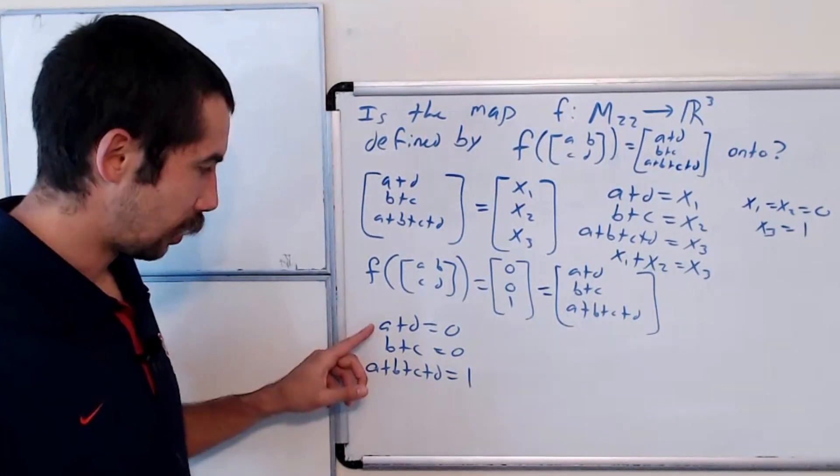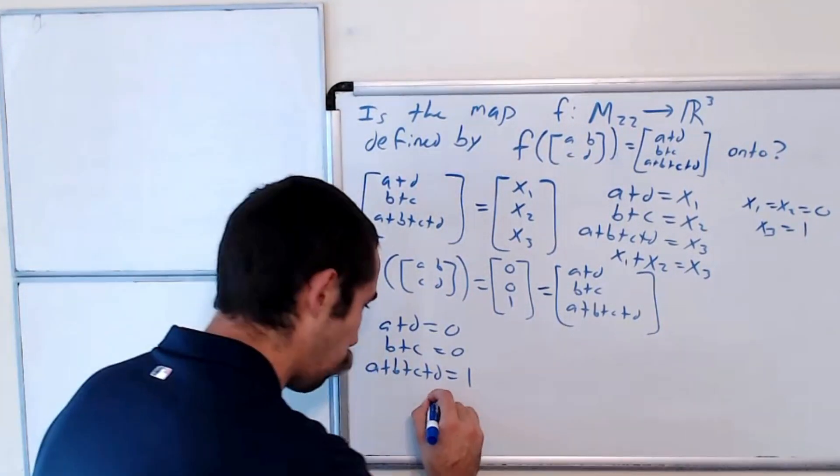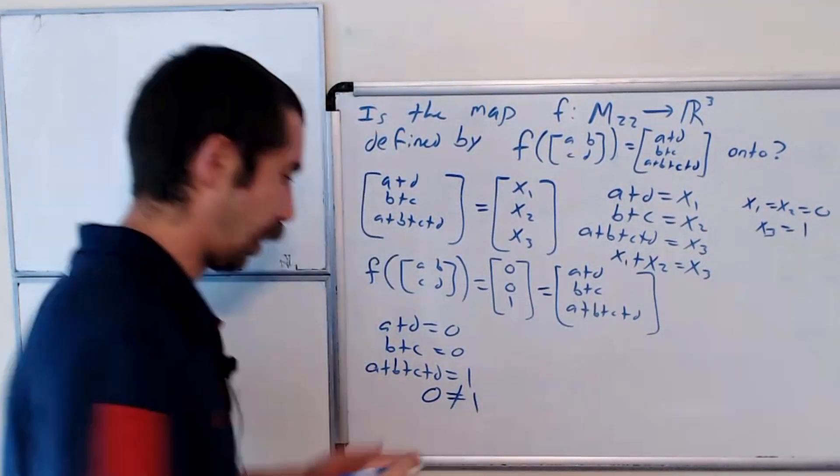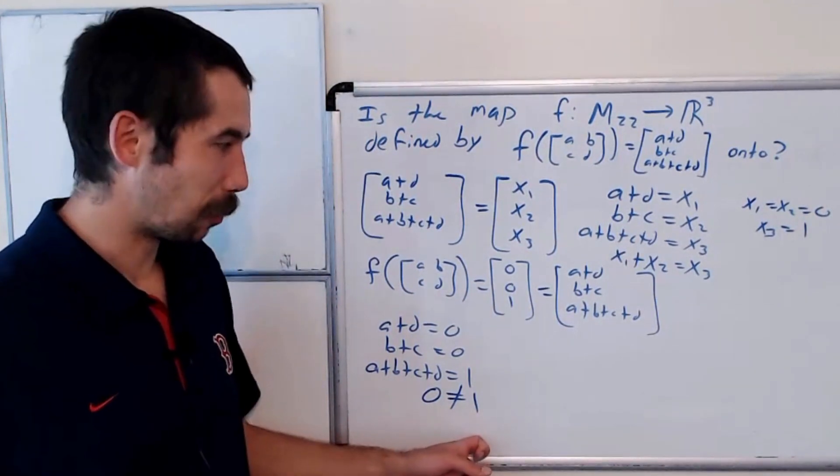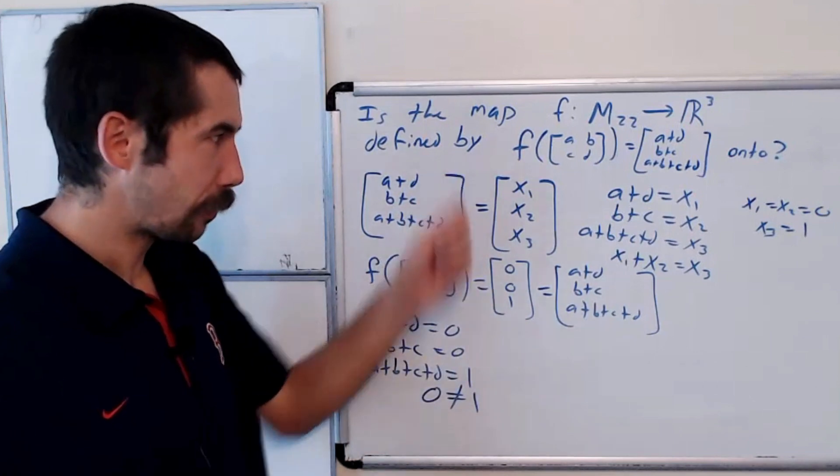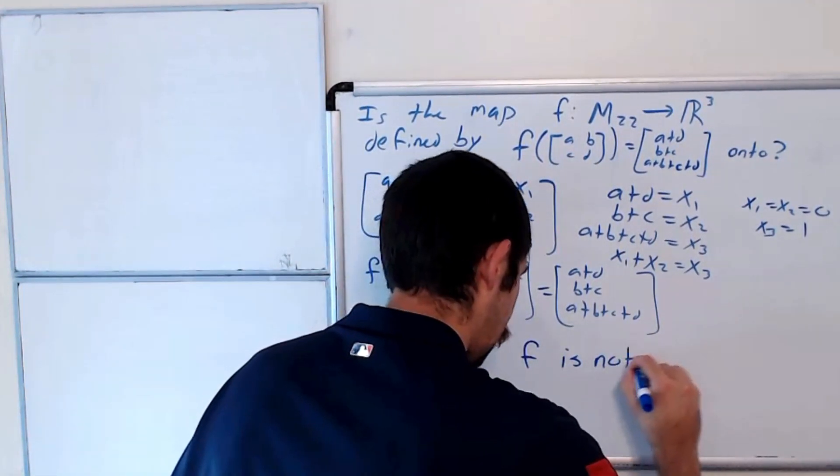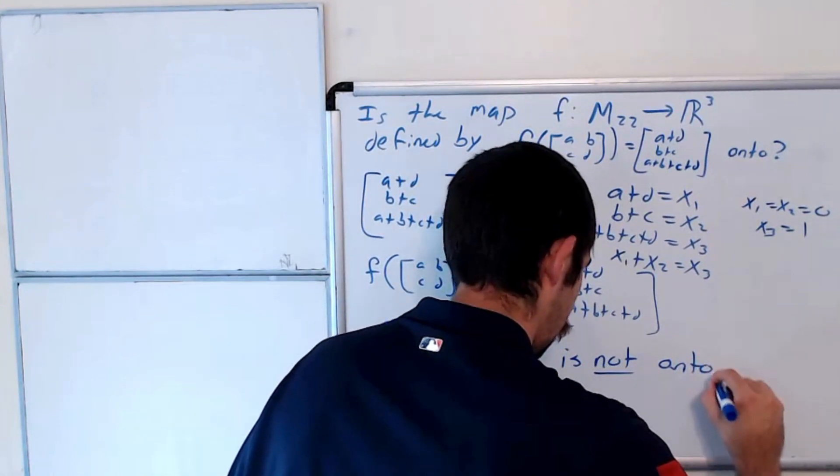But just as before, this is a contradiction, because this left hand side adds up to zero, the right hand side is one. And we know that zero is not equal to one. So this vector is not in the range of F. So F is not onto.